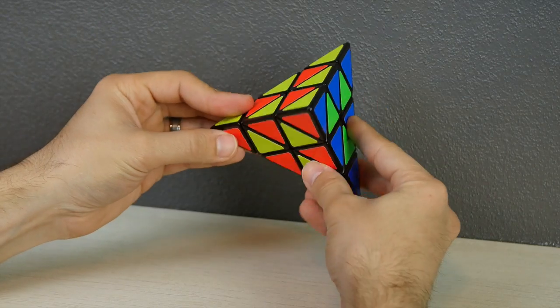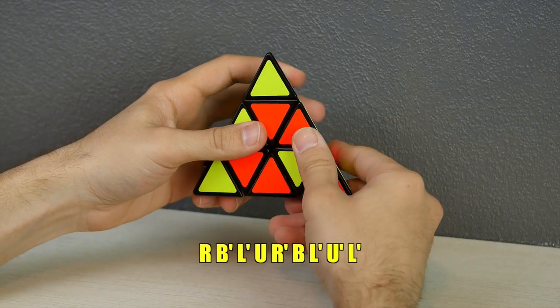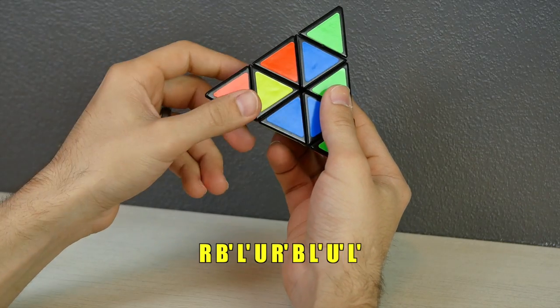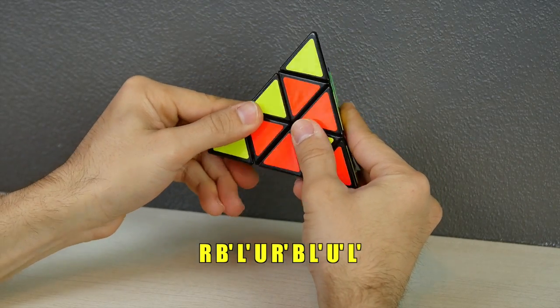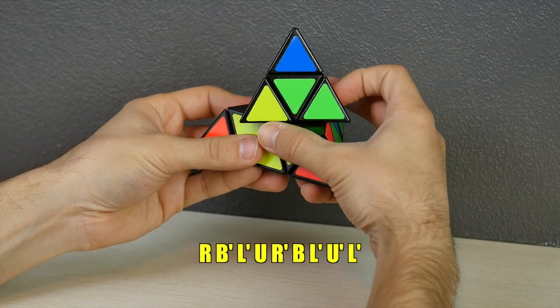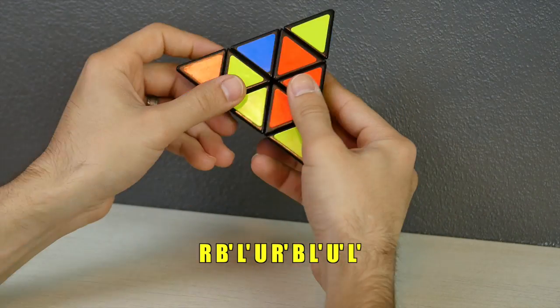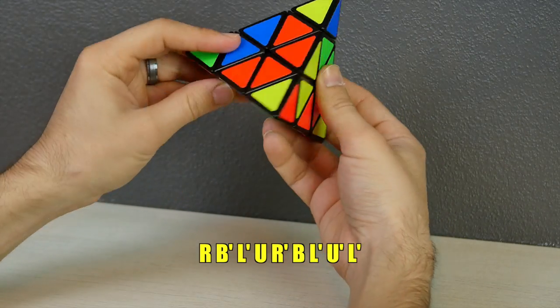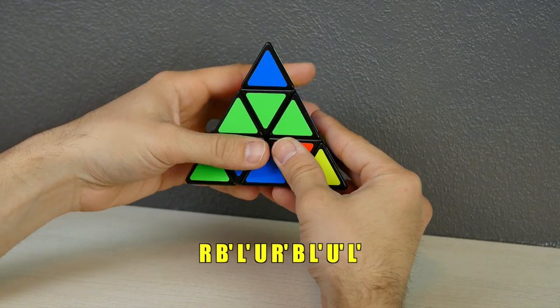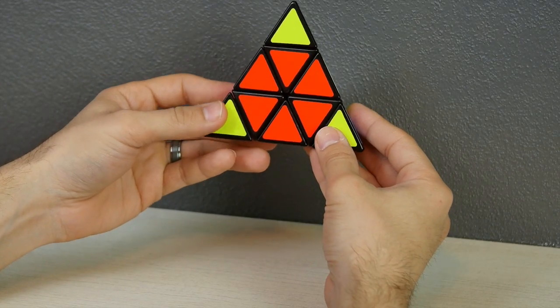Right, back prime or back counterclockwise, left counterclockwise, up, right counterclockwise, back, left counterclockwise, up counterclockwise, and then left counterclockwise.